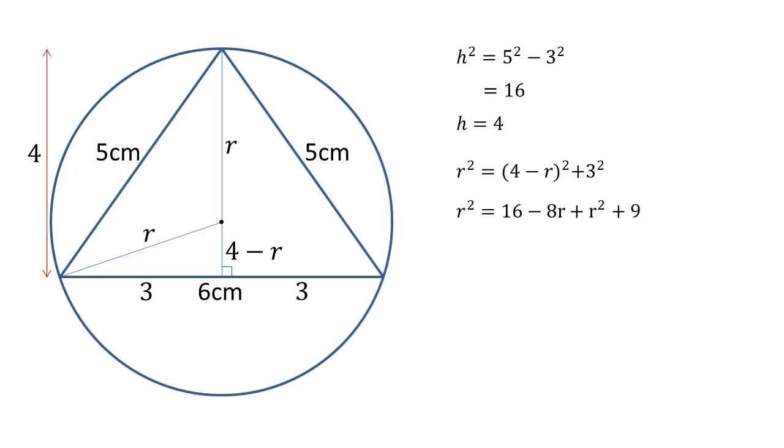Looking at our equation now, we've got R squared on both sides, so let's cancel them. And if we bring the 16 and the 9 together, we get that 0 is equal to 25 minus 8R. So 8R is equal to 25. R is equal to 25 over 8, which is a decimal. It's 3.125 centimeters. And there we go. The radius is 3.125 centimeters.